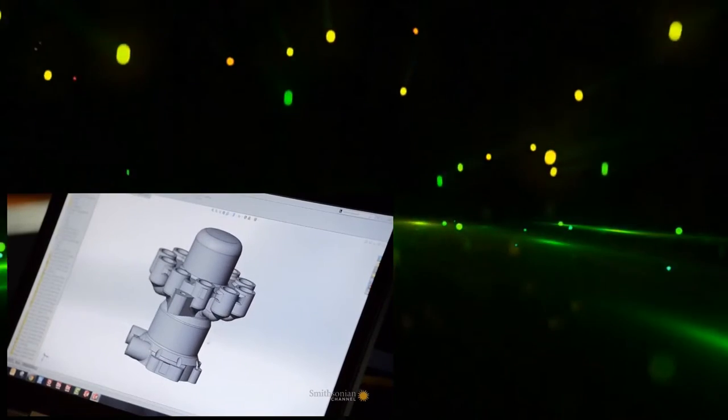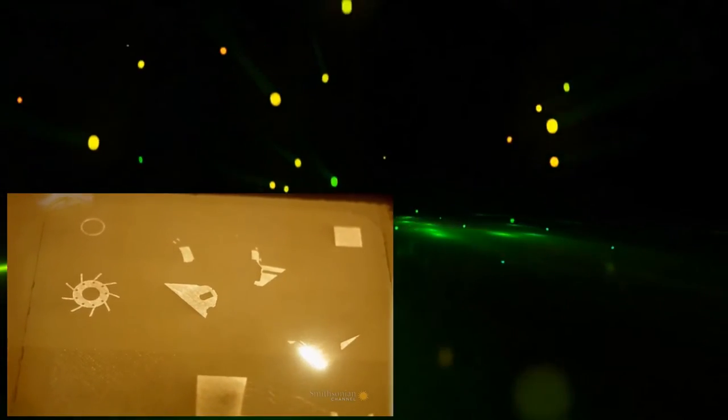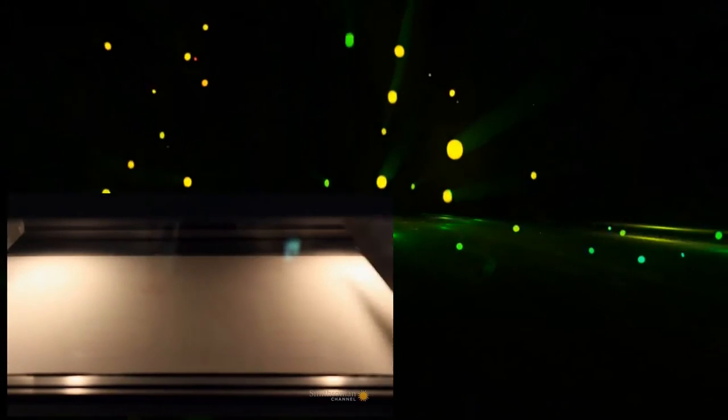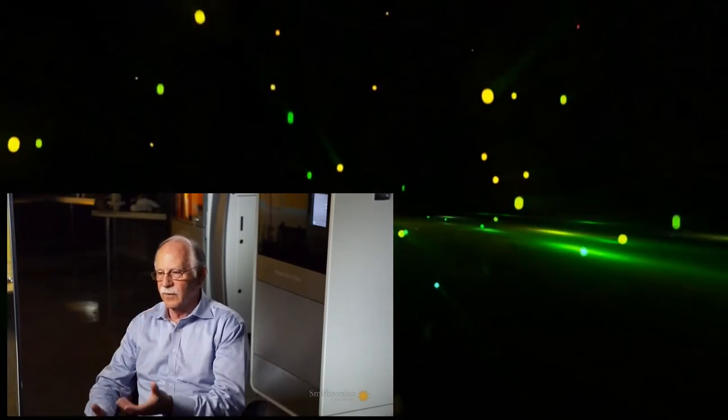The computer feeds a wireframe image of the object to be printed in microscopic horizontal layers. An ultraviolet laser traces a cross-section of each layer, solidifying it to the one beneath. After hundreds of layers now, your part's finished, and it pops up and you have the empty part.